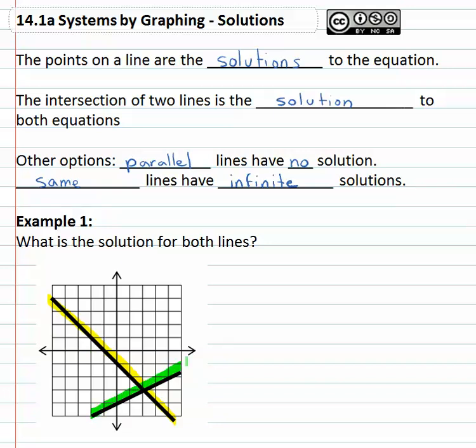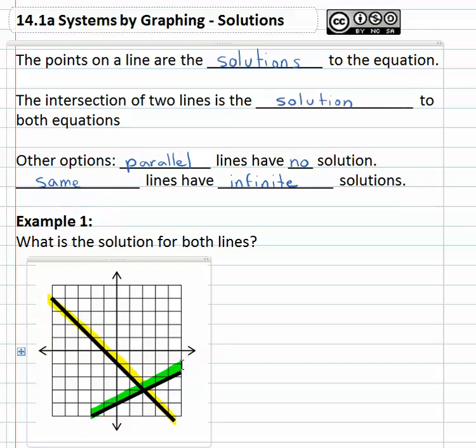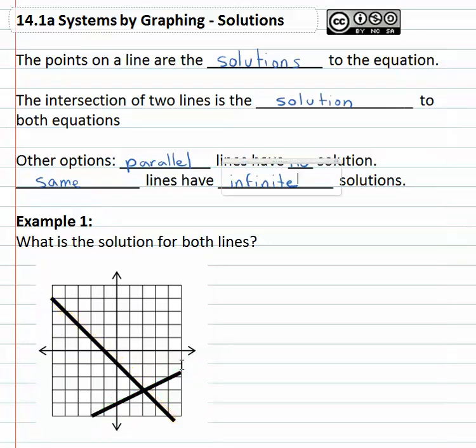We've got a set of solutions for the yellow line, a set of solutions for the green line. What we're interested in is the solution that works on both lines and you will notice they intersect right here.